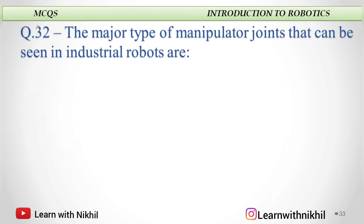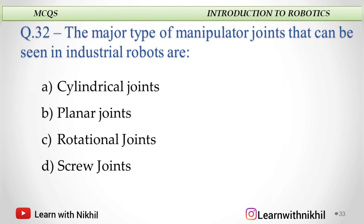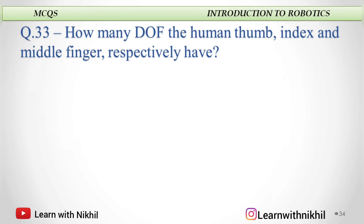Next question: The major type of manipulator joints that can be seen in industrial robots are — cylindrical, planar, rotational, or screw joints? The answer is rotational joints.